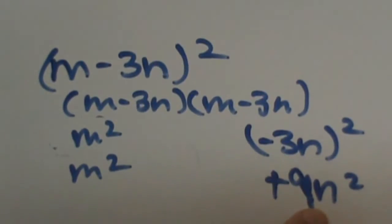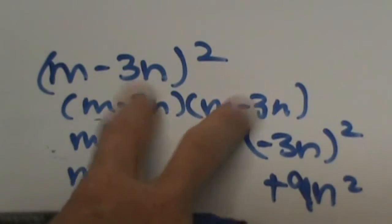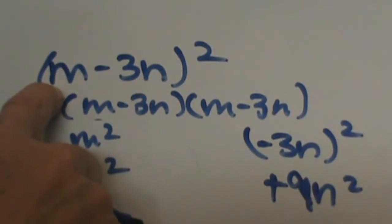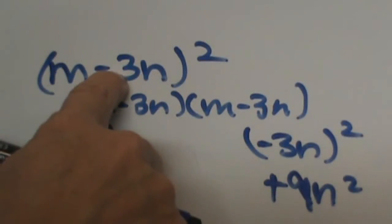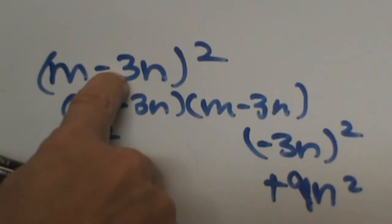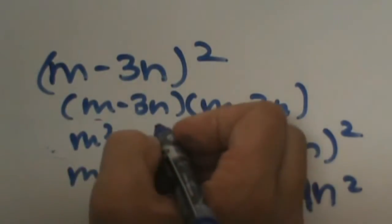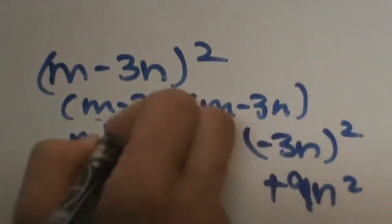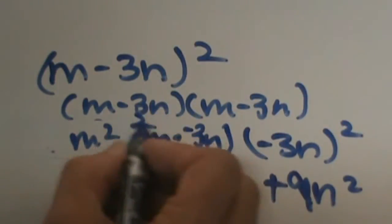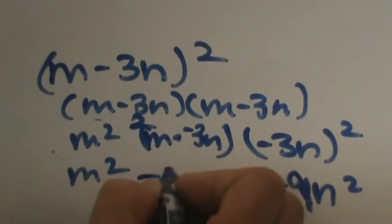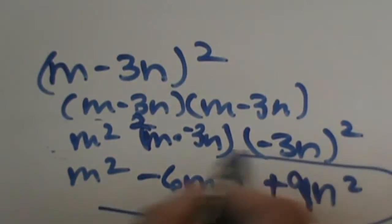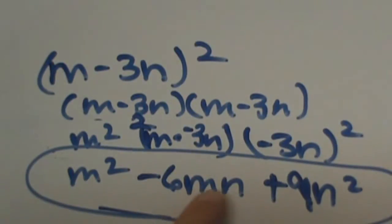Now for the middle term — we can do outer and inner, or just take the two terms and multiply and double. 1m times negative 3n gives negative 3mn, and doubling that gives us negative 6mn. So the answer is m squared plus 9n squared minus 6mn. It was a little more involved because we had a variable in the back.